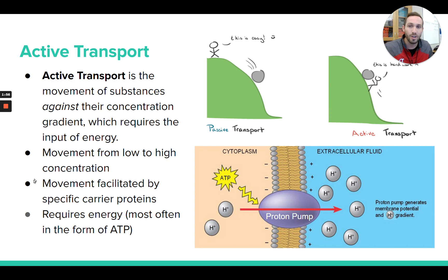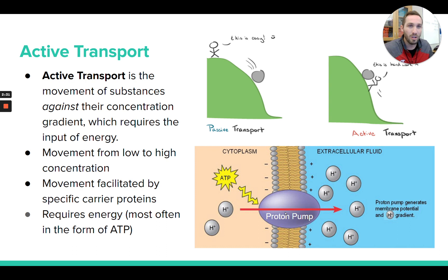This movement is going to require specific proteins to help move these things against their gradient. This will require carrier proteins and not channel proteins. Channel proteins just have a channel down the middle that things can freely flow through, and that only works for passive transport when things are moving in the direction the universe wants — going down their concentration gradient from high to low. But in active transport, carrier proteins are always required because you need a protein to actually bind to the substance and literally push it to the other side.